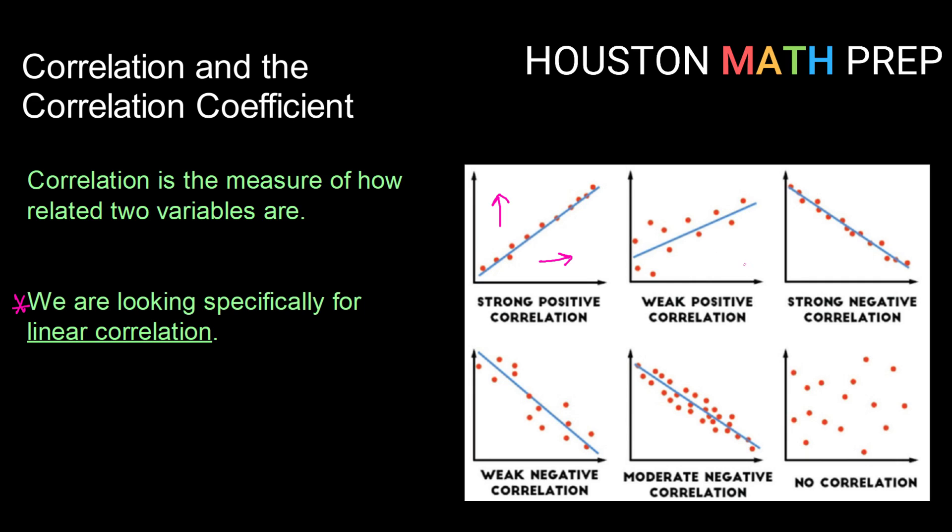Compare that here to a weak positive correlation. So it is still the case that in general, as one variable increases, so does the other, but our data values are much more spread out around our line of best fit. So they have a much weaker positive correlation.